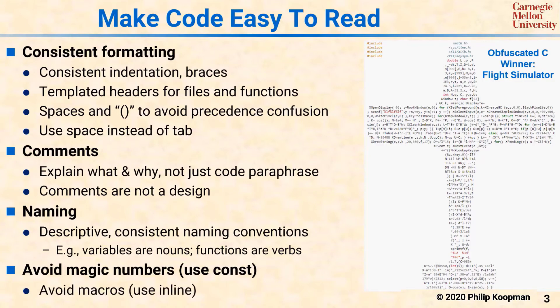Finally, macros should be avoided because they're subject to tricky failure modes and easily obscure what's really going on. The simplest example of avoiding macros is that you should not use #define to set a constant value, but rather use the const keyword with integers so that you can use the compiler support for this. Among other things, that gives you stronger type checking.